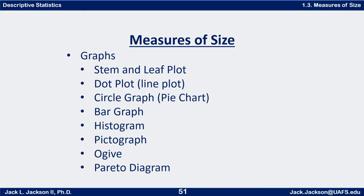There are also several graphical measures of size and ways of representing the sizes of different parts of a data set. We have a stem and leaf plot, a dot plot (sometimes called a line plot), a circle graph (or sometimes called a pie chart), bar graph, histogram, pictograph, ogive, and Pareto diagrams. These are just some of the ones that may exist — there are actually many other types of graphs as well, but these are some of the most basic ones we'll be talking about.